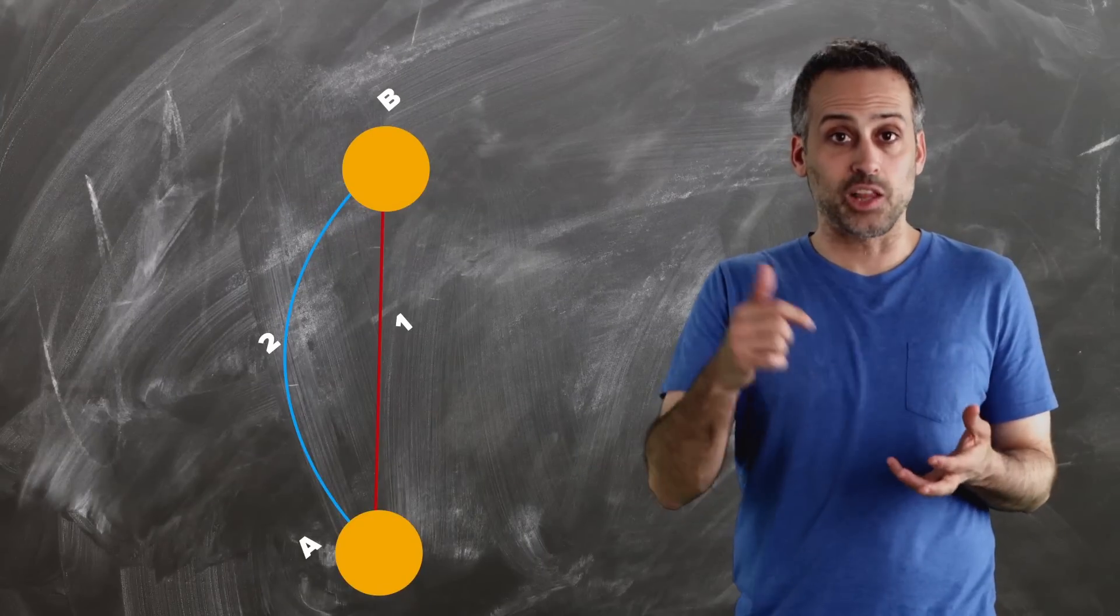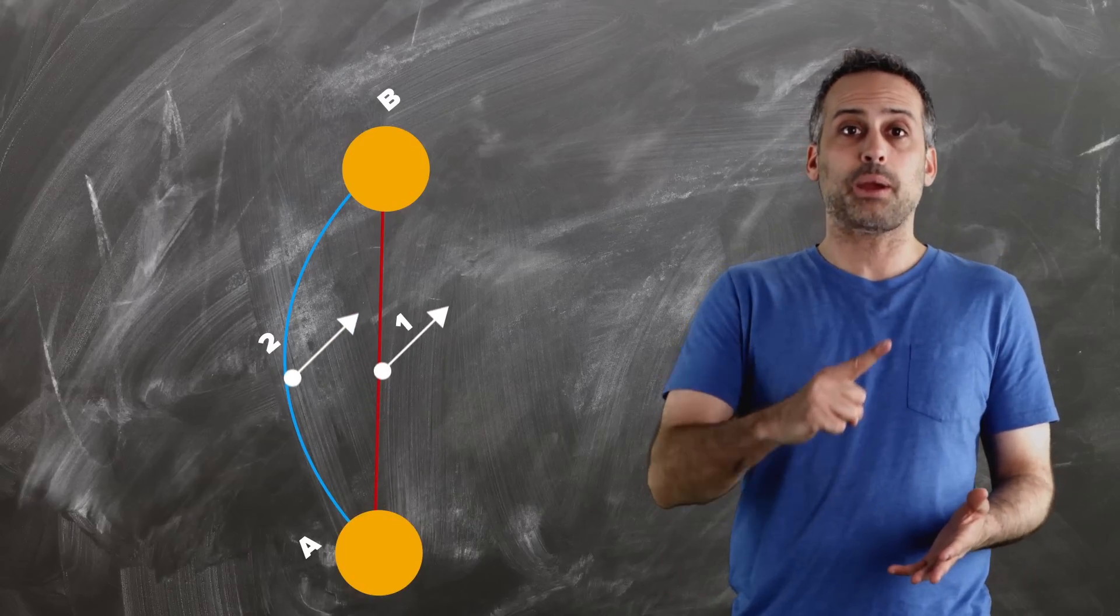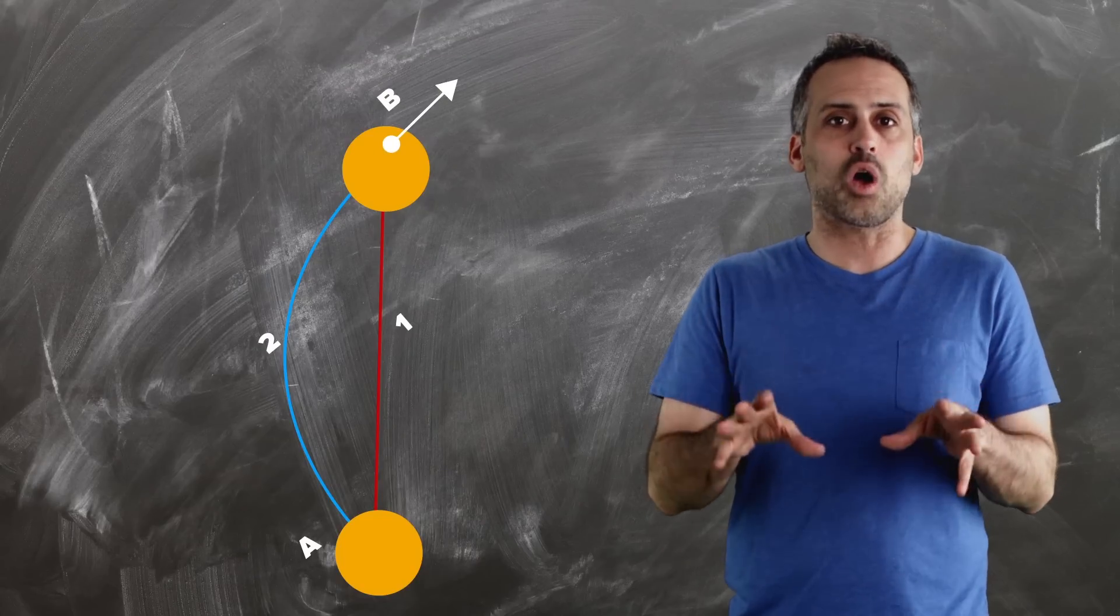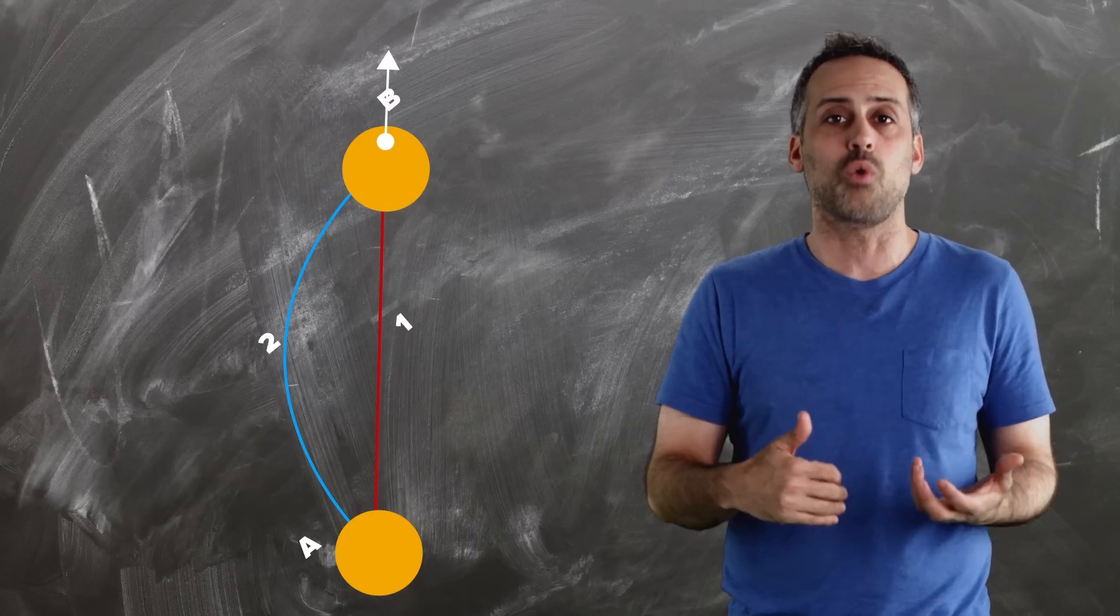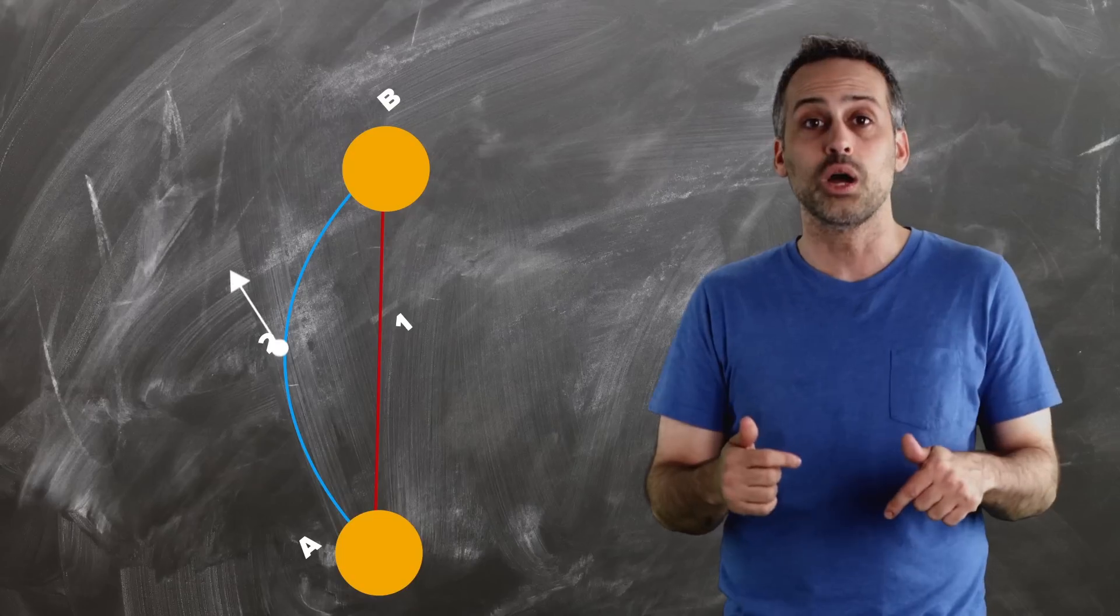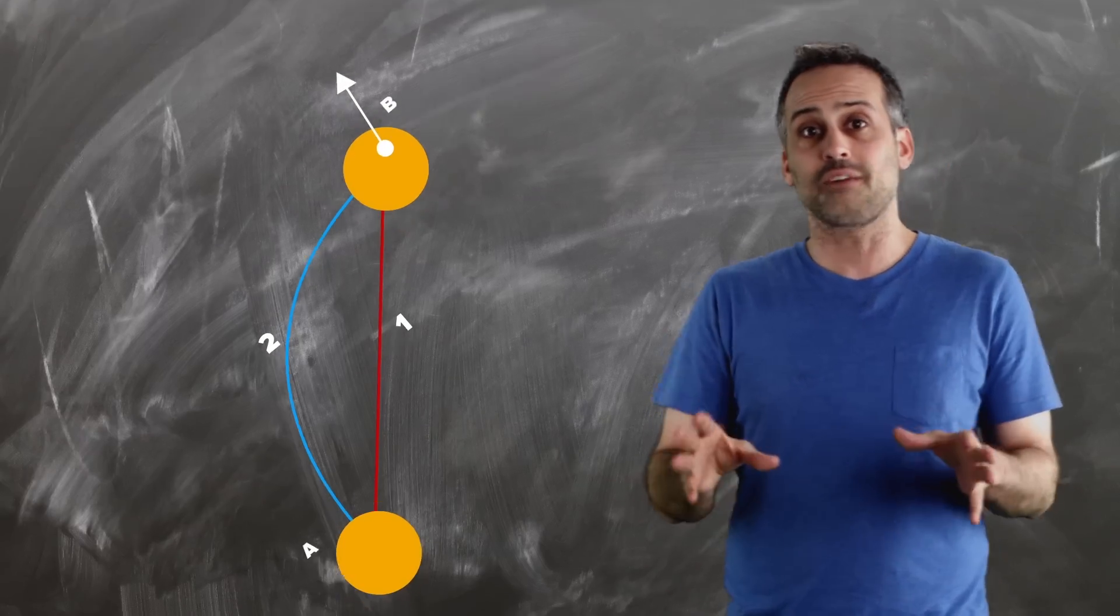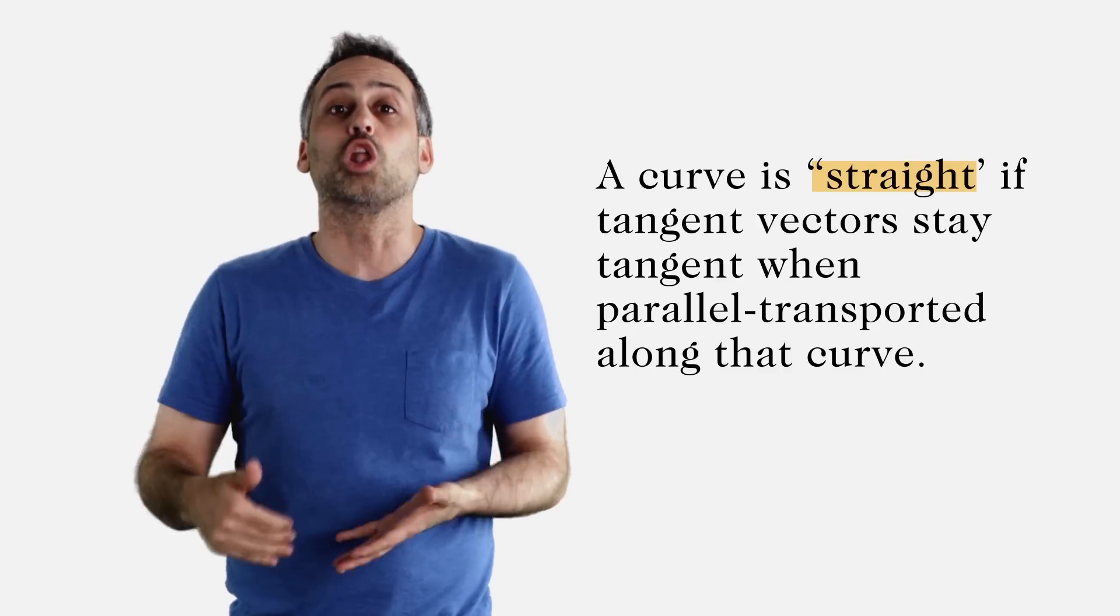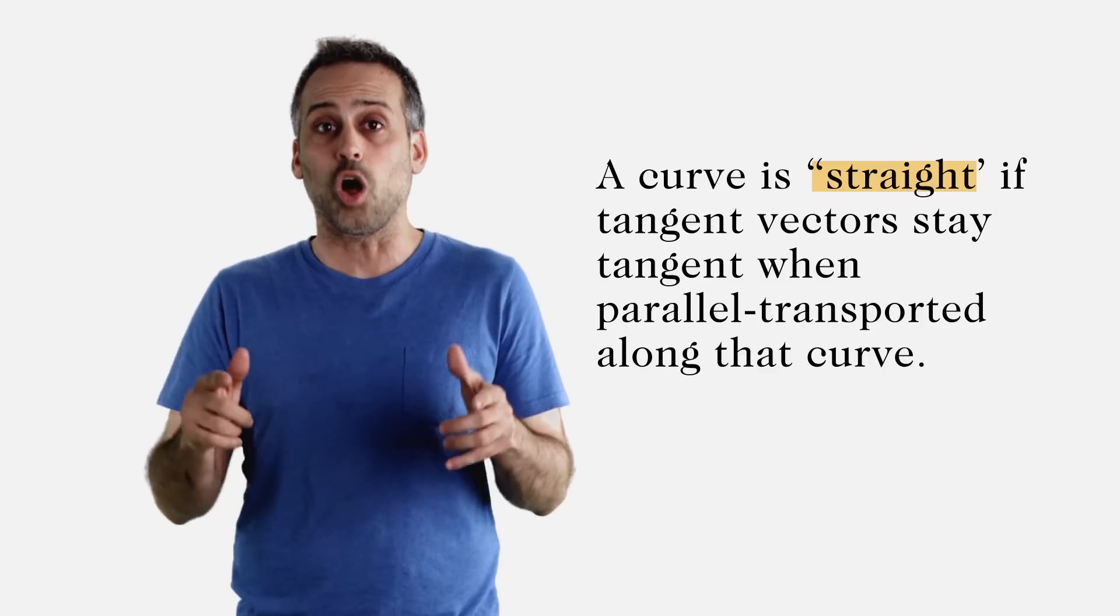Draw a tiny vector with its tail at point A. You can slide that vector from point A to point B along curve one or along curve two, while keeping it parallel to its original direction. This operation is called parallel transporting a vector along a curve. Now draw a vector at point A specifically that's tangent to curve one, and parallel transport that vector to B along curve one. At every point along the way, it remains tangent to curve one. In contrast, if we take a vector tangent to curve two, and parallel transport it to B along curve two, it does not remain tangent to curve two at all points. So it looks like we have our definition. A curve is straight if tangent vectors stay tangent when they're parallel transported along that curve. Mathematicians realized a long time ago that this definition generalizes very nicely. And it's also very useful.